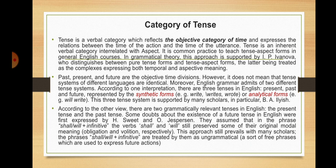However, it does not mean that tense systems of different languages are identical. English grammar admits of two different tense systems. According to one interpretation, there are three tenses in English — present, past, and future — represented by synthetic forms (write, writes, wrote) or analytical forms (will write). According to the other view, there are only two grammatically relevant tenses in English — the present tense and the past tense. Doubts about the existence of a future tense were first expressed by Henry Sweet and Otto Jespersen, and this approach still prevails with many scholars, who treat 'shall/will plus infinitive' as ungrammatical.